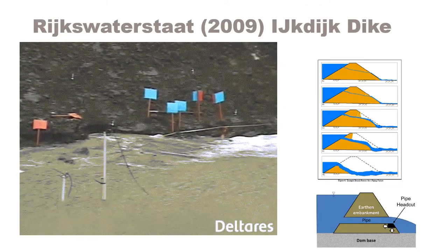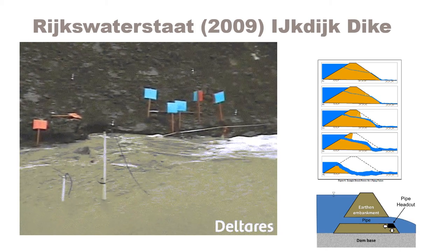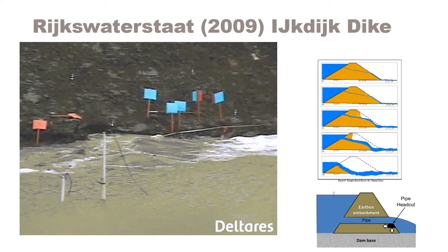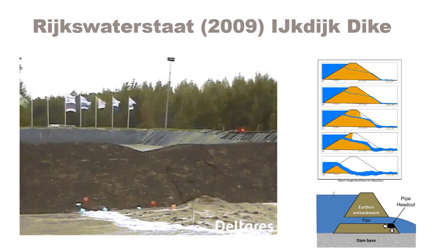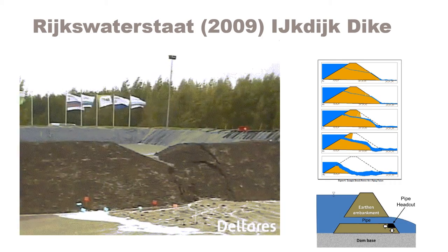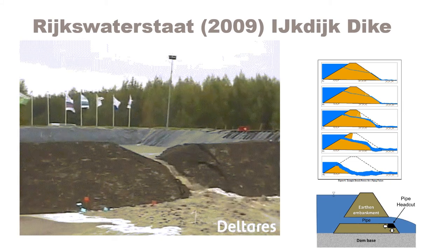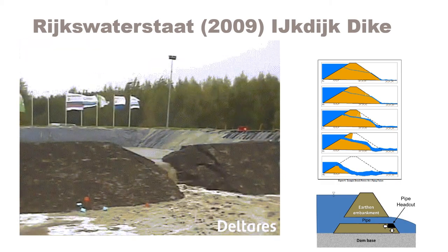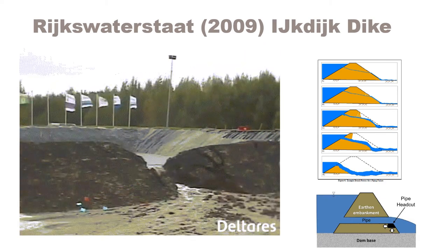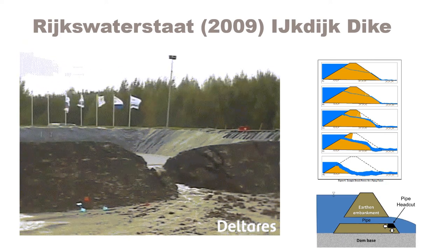This is a video of a large-scale field test of a dike in the Netherlands. Small head cuts can initially form at the discharge end of the pipe, leading to bigger head cuts when the crest collapses and overtopping ensues. At this point, the crest is lowered with the embankment collapse into the developing pipe. Next, the freeboard is exceeded on the deformed crest overlying the pipe and overtopping ensues. A couple of head cuts are observable as overtopping erosion continues. Multiple head cuts appear to have merged into one larger head cut. Here is the final breach width at the end of the video.